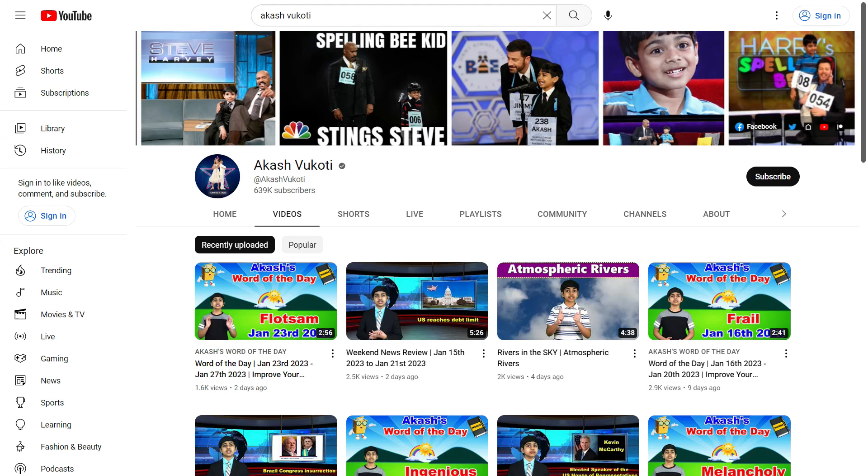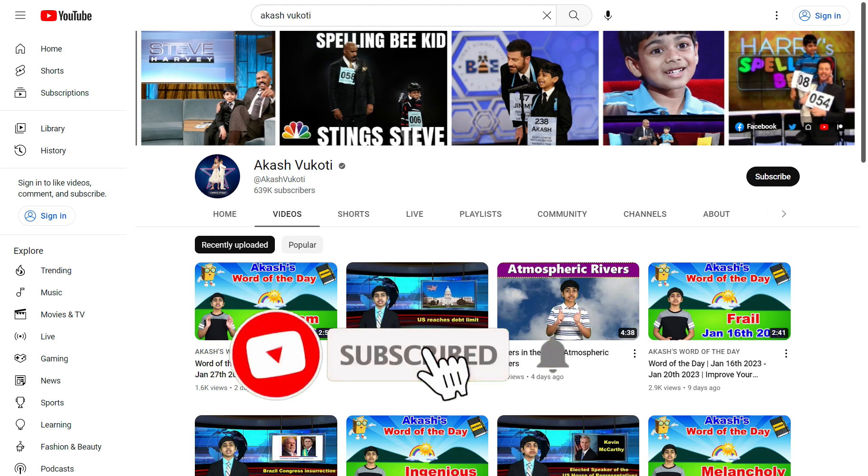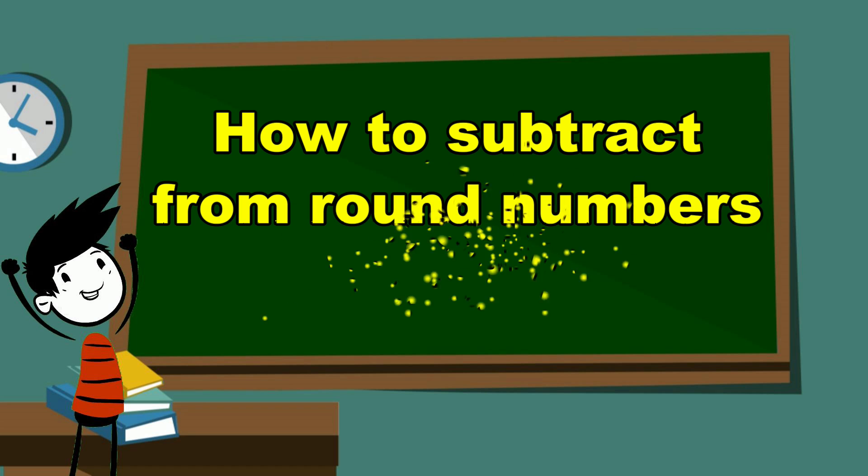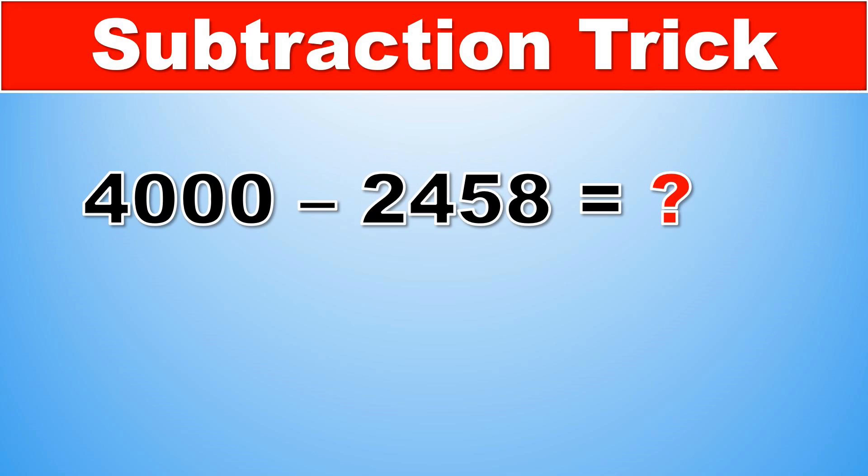Hello friends, I'm Akash, and a hearty welcome to my YouTube channel. In this video, we are going to learn a simple subtraction trick to subtract any number from a round number. Let's take a look at the first example of this trick: 4000 minus 2458.